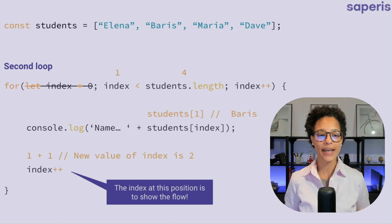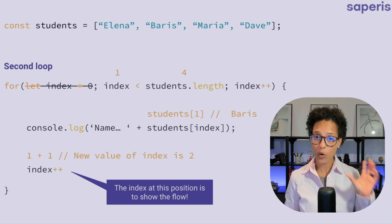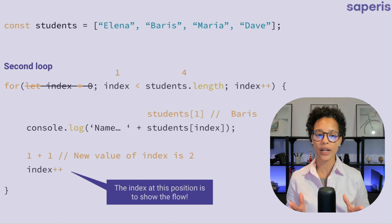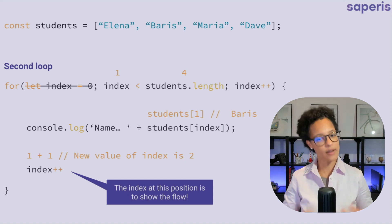I stroke through the let index just to show you that on the second loop, we're not initializing the counter anymore. That only happens on the first loop. So on the second loop, we have our conditional. Let's check in. Is one less than four? It is.